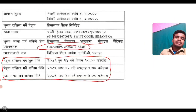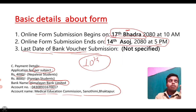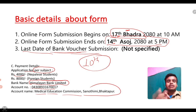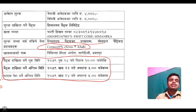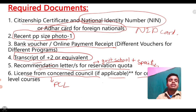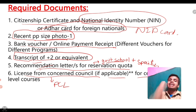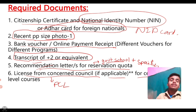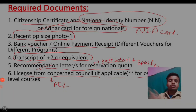Let's wrap up. The form fee is per subject. Required documents include transcripts, and a license is needed only for diploma-level courses, not for Plus Two science students.